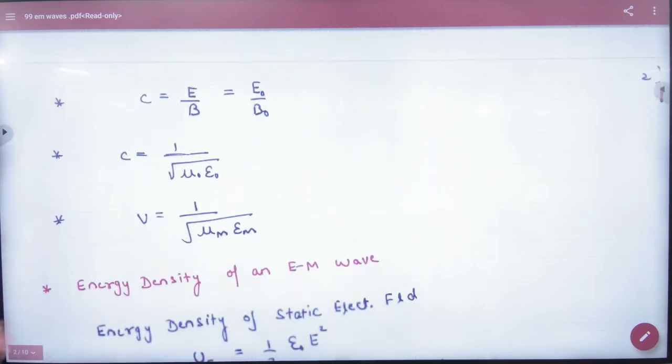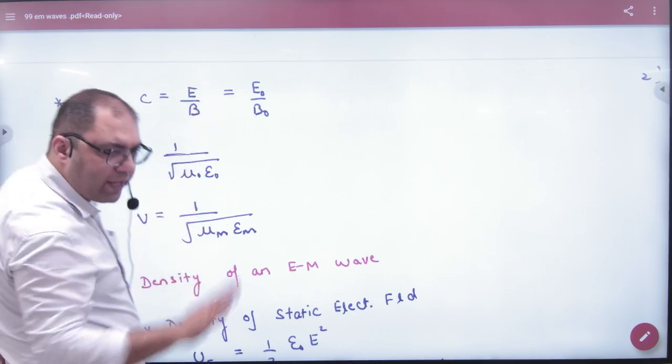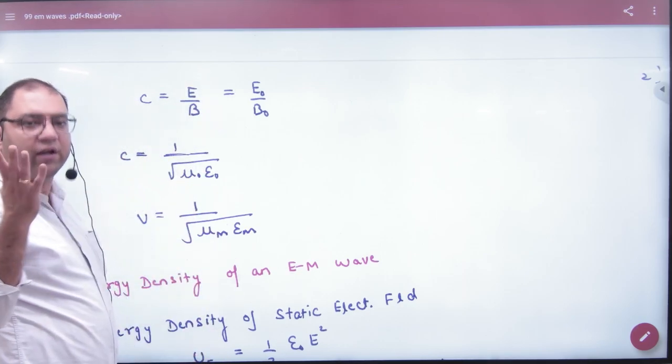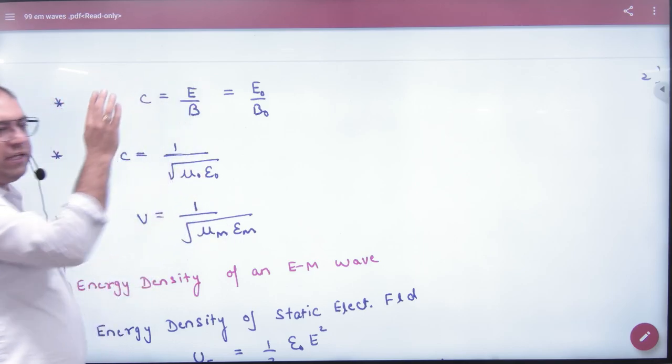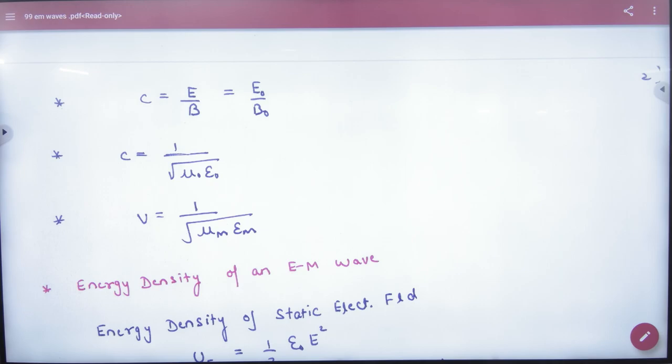Next is a very important formula. This formula is for questions where they don't give E or B - it will give you only E and you will also remove B yourself. So if you give whatever E, because the speed of EM wave is electric upon magnetic field ratio. In any instant, whatever E will be divided by B, then the speed of EM wave will come.